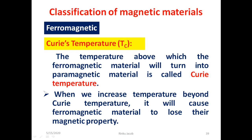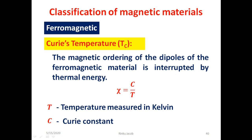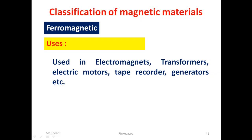Now we discuss about Curie's temperature. The temperature above which a ferromagnetic material turns into a paramagnetic material is called the Curie temperature. When we increase temperature beyond the Curie temperature, the ferromagnetic material loses its magnetic property. The magnetic ordering of the dipoles is interrupted by thermal energy, and the relation between chi and temperature is given as chi equals C by T, where T is the temperature in Kelvin and C is the Curie constant. Ferromagnetic materials are used in electromagnets, transformers, electric motors, tape recorders, generators, etc.